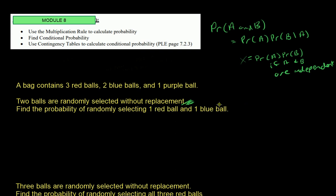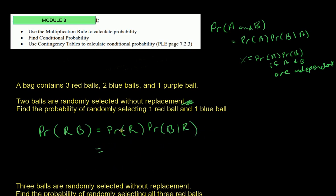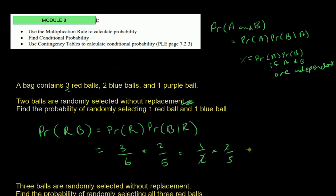Find the probability of selecting one red ball and one blue ball. This is the probability of getting a red times the probability of getting a blue given that you already got a red — that's the multiplication rule. Probability of red is 3 out of 6. Then the probability of blue given red: there are 2 blue balls, but now only 5 balls remain. So it's 3/6 times 2/5, which simplifies: the twos cancel, leaving one-fifth.